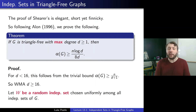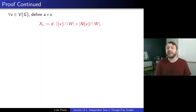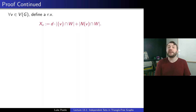For every vertex v in V(G), we define a random variable Xv = d times |{v} ∩ W| plus |N(v) ∩ W|. So {v} ∩ W is 1 if v is in W and 0 otherwise, making the first term equal to d if v is in the independent set and 0 otherwise. The second term is the number of neighbors in the independent set. Note: if v is in W, the second term is 0 since W is an independent set. So basically, if v is in W we record d, and if not, we record the number of v's neighbors in W.